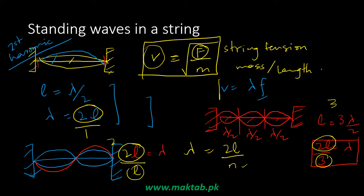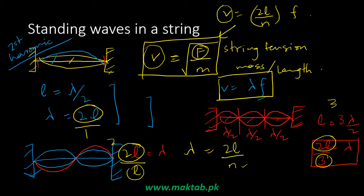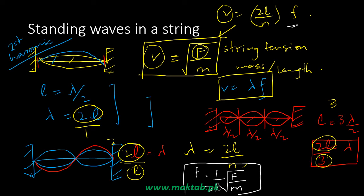With this relationship, I substitute the value of lambda into the speed relationship v equals f times lambda. So v equals 2L over n times frequency. Putting this v value into the tension formula and correlating the tension and mass with frequency, I get: f equals the square root of F over m, divided by 2L. So the natural frequency at which my string vibrates is 1 over 2 times the length of the string, multiplied by the square root of tension divided by mass per unit length.